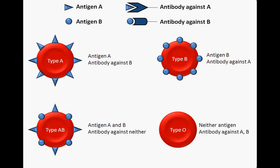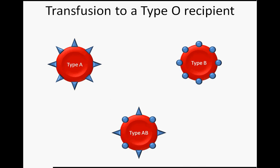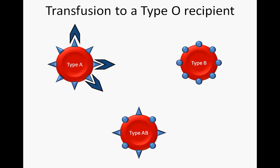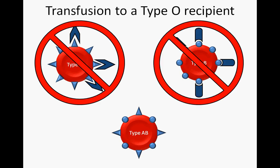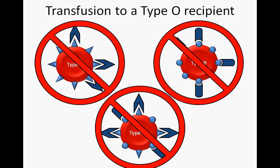Before you receive a blood transfusion, you must be sure that your body doesn't produce antibodies against any of the antigens present on the blood you will receive. This is easy for someone with blood type AB — after all, they don't make antibodies against either antigen and are therefore a universal acceptor. However, if your blood cells show no antigens, making you type O, blood that contains either antigen A or B would be attacked by your immune system. On the bright side, people with type O blood are universal donors because their blood contains no antigens to be attacked.